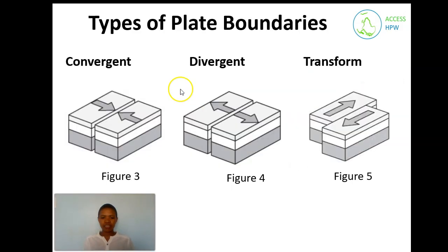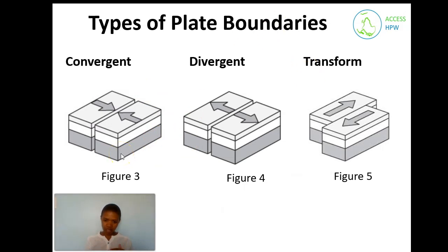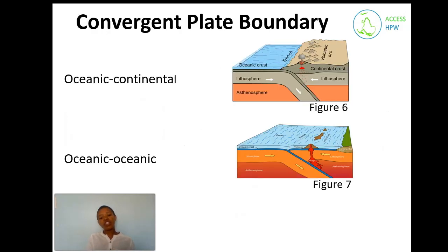We've learned that continents drift and that this is caused by convection cells. Now the question is how do they drift? Figure three shows plates drifting towards each other, figure four shows them drifting away from each other, and figure five shows them moving past each other. When they move towards each other it's called convergent plate boundaries, and there are three types.